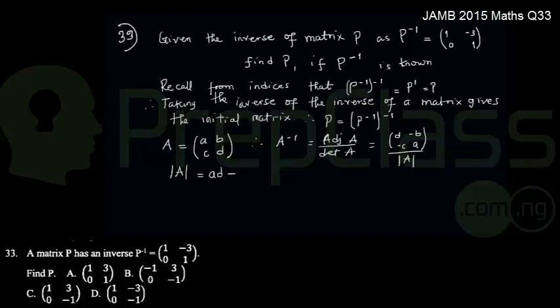So coming back to our matrix question, we need to find the value of P and we realize that P is actually the inverse of its own inverse. So therefore, let's bring up matrix P inverse. This is matrix P inverse. So matrix P inverse, I would have 1, 0, minus 3, 1.